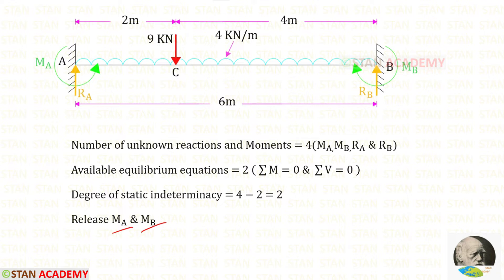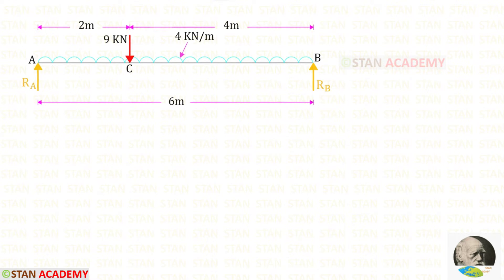When we remove both of them, this beam will become a simply supported beam. Here you can see that I have converted the fixed beam into a simply supported beam. Now let us find the vertical reactions Ra and Rb in this beam.